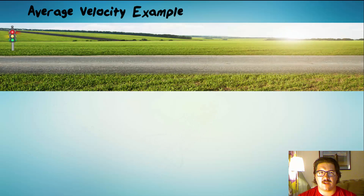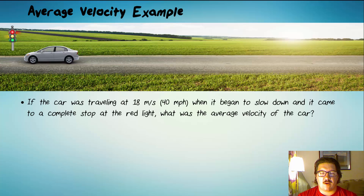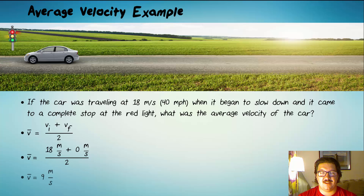Let's take a look at one more example. A car was traveling 18 meters per second when it began to slow down, and it came to a complete stop at the red light. What was the average velocity of the car? Average velocity is (vi + vf) / 2, so 18 meters per second plus 0 over 2 is 9 meters per second. That's it.